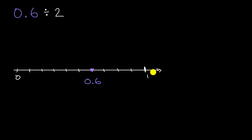And so one way to think about it is, if I wanted to go from zero to 6 tenths in two jumps, how big would each of those jumps have to be? Pause this video and try to figure that out on your own before we work through it together.